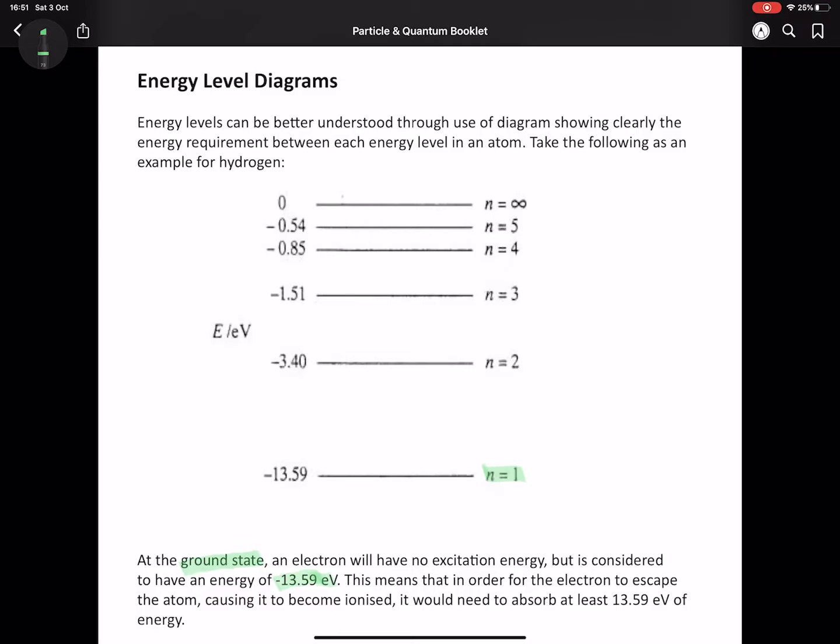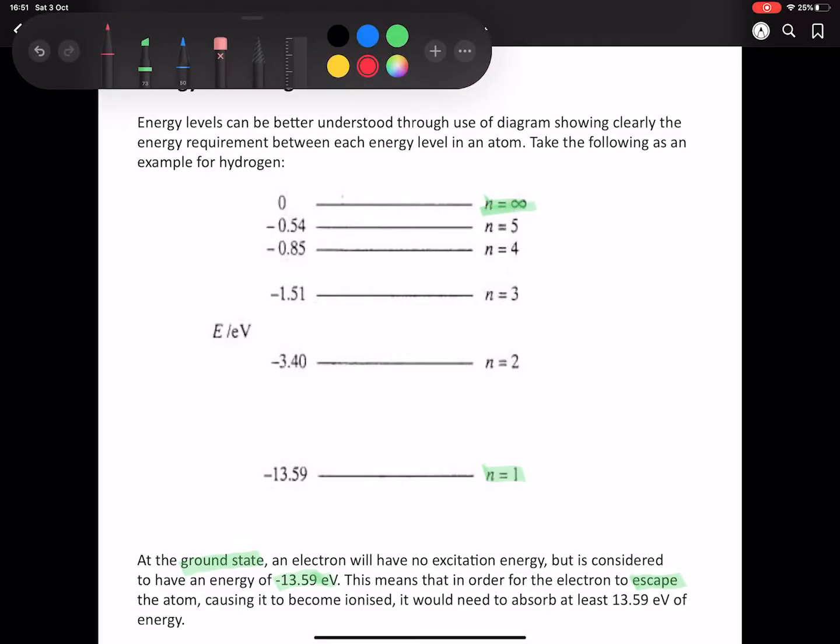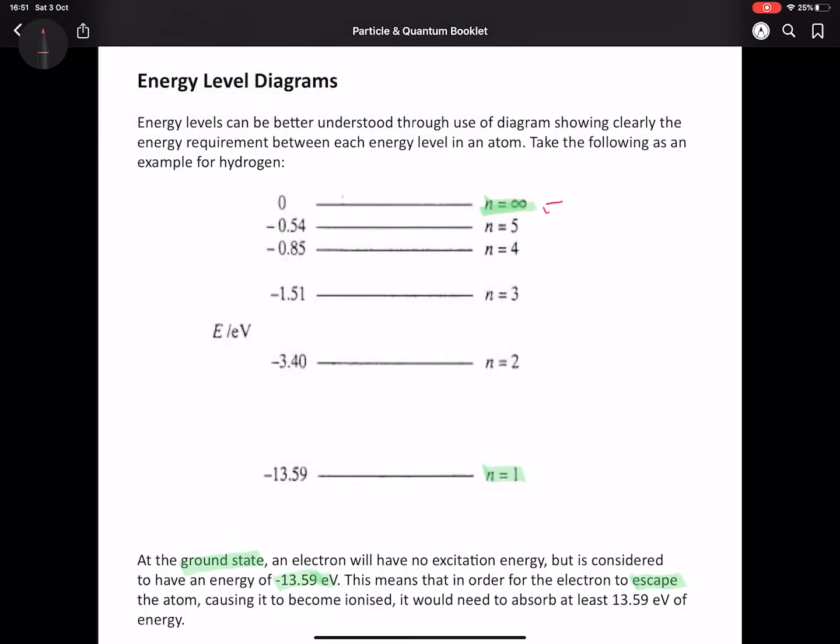That is the amount of energy needed for the electron in the ground state to leave the atom, for it to become an ion as the electron has left. n equals infinity is the ionization energy level. As you can see, the energy value is zero, because that's how much energy would be needed at that level to escape. This is essentially an energy well. The electron is trapped at the bottom and needs to climb up.